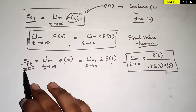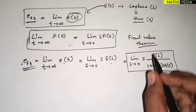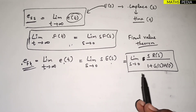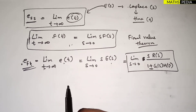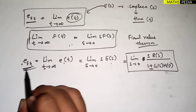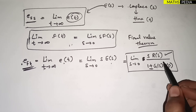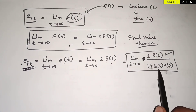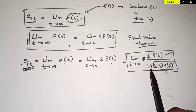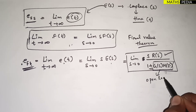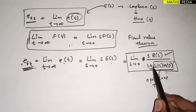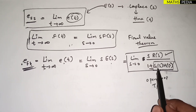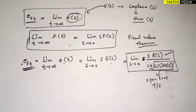So the final steady-state error formula is: E_ss = limit s → 0 of s·R(s) / [1 + G(s)·H(s)]. Steady-state error depends on two things: R(s), the reference input, and G(s)·H(s), which is the open-loop transfer function. These two factors determine the steady-state error in a negative feedback control system.